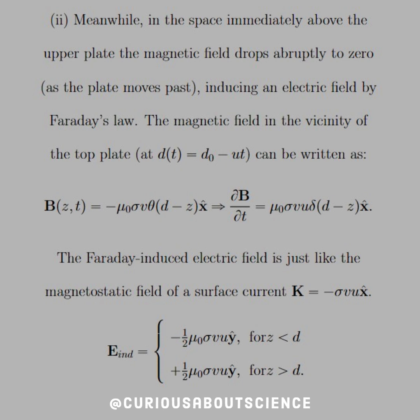All right, so part two, meanwhile: in the space immediately above the upper plate, the magnetic field drops abruptly to zero as the plate moves past, inducing an electric field by Faraday's law. The magnetic field in the vicinity of the top plate can be written as B for a function of z and t equals negative mu0 sigma v theta d minus z, where theta is the step function. And we see that by taking the time derivative for Faraday's law, that step function turns into a Dirac delta.